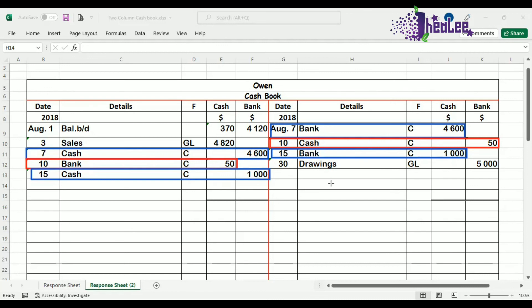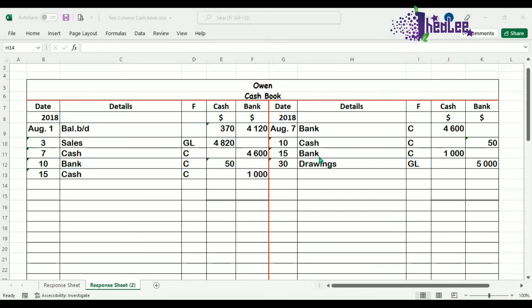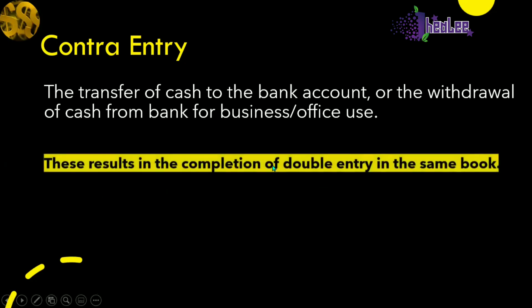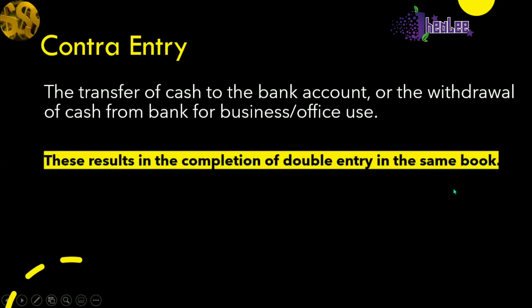So coming out of this cashbook, there are three contra entries. A contra-entry is the transfer of cash to the bank account or the withdrawal of cash from bank for business or office use. These result in the completion of double entry in the same book — basically, both debit and credit entries are located in the same book. And that takes us to the end of our lesson on contra-entry.